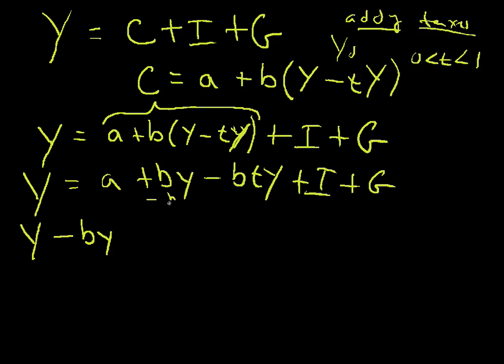So we end up with y minus by. I'm subtracting by from here and those cancel out. And now I've got to add a bty over here, so I add bty and if I add a bty over here, those cancel out.